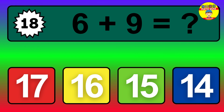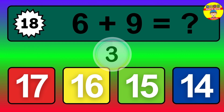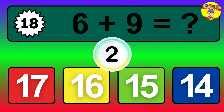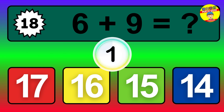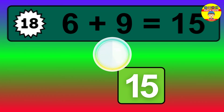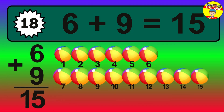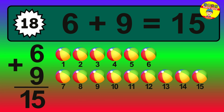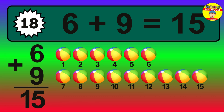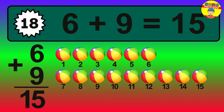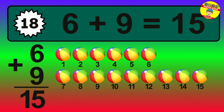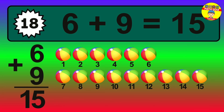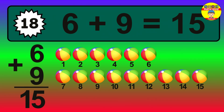Question 18. 6 plus 9 equals what? The answer is 6 plus 9 is 15. Let's count it: 1, 2, 3, 4, 5, 6, 7, 8, 9, 10, 11, 12, 13, 14, 15.